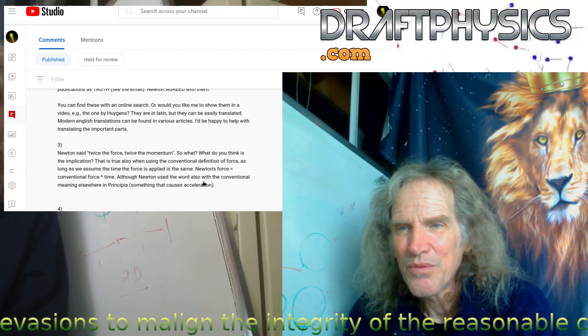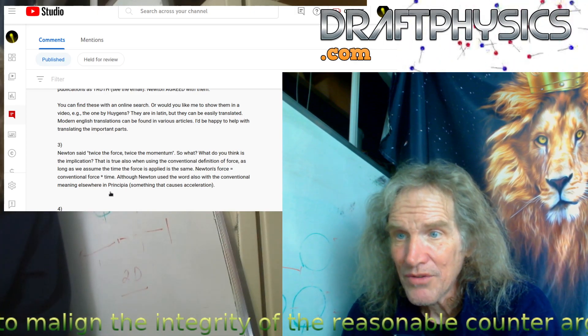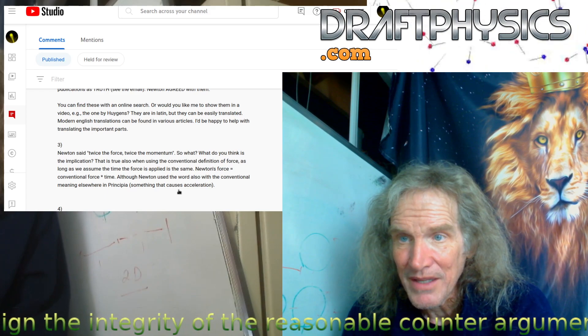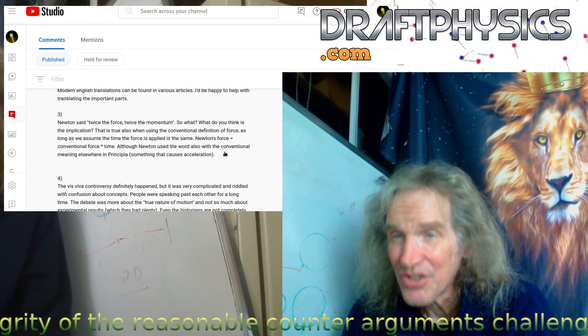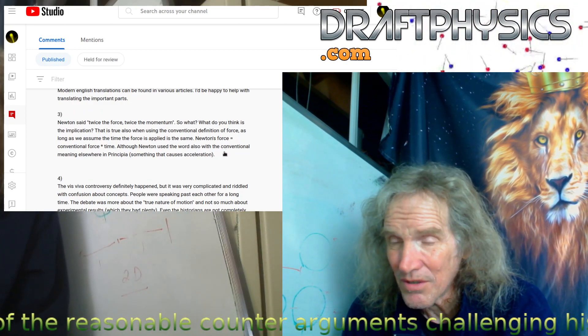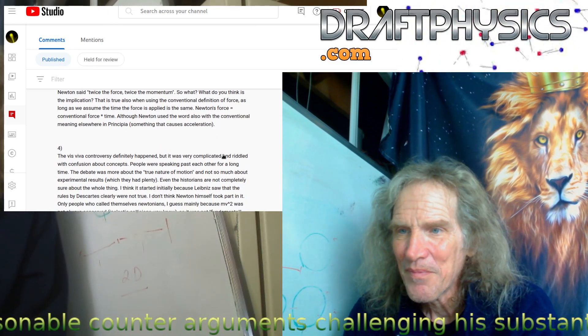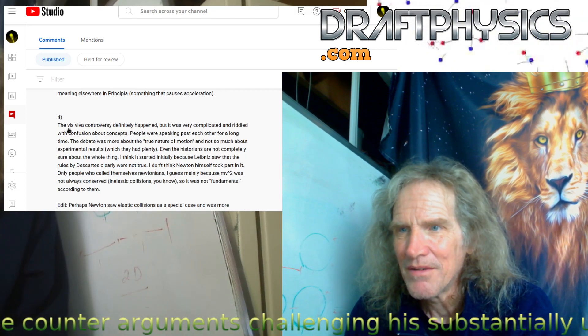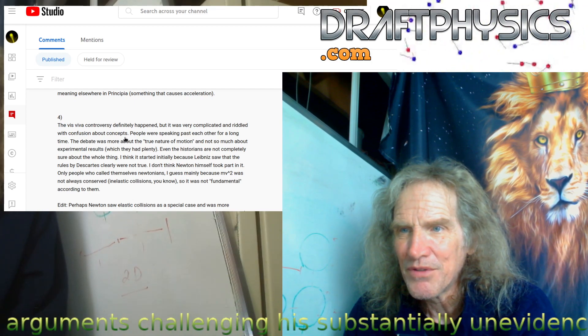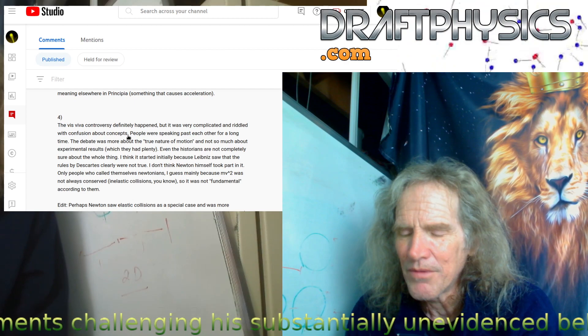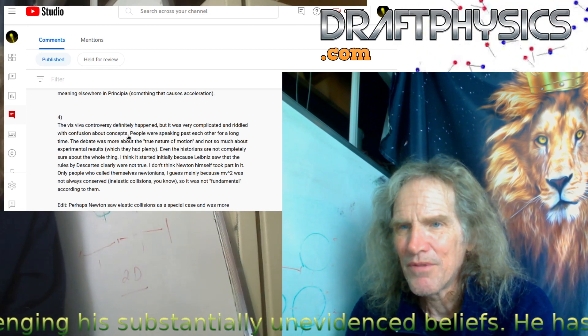Newton's force equals conventional force times time. What does that even mean? What are you talking about? Conventional meaning elsewhere in Principia: something that causes acceleration. An acceleration is just a change in velocity. Newton made that clear also. There's nothing special about an acceleration - it's just a change in velocity. The vis-viva controversy definitely happened, but it was very complicated and riddled with confusion about concepts. No, it wasn't. It was a clear argument. Leibniz said you're a free energy nut, and then Newton said back you're a free energy nut. It's that simple. Fuck you. You're a liar.